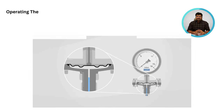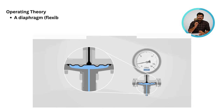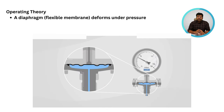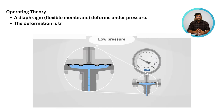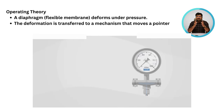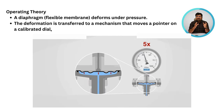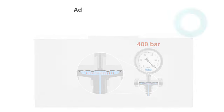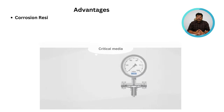In this type of pressure gauge, the diaphragm is a special type of flexible membrane that deforms under pressure. This deformation is transformed into a mechanism that moves a pointer on a calibrated dial, which indicates the pressure.